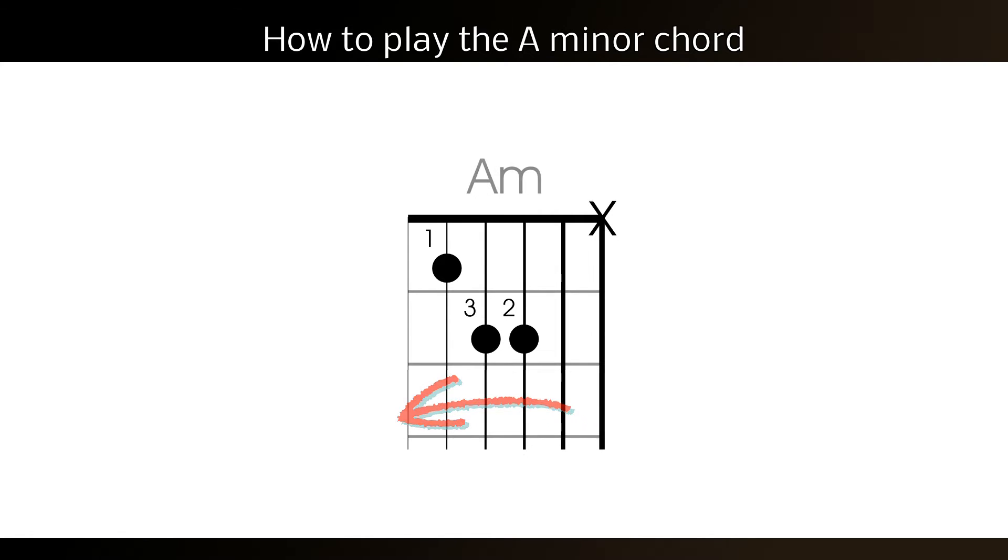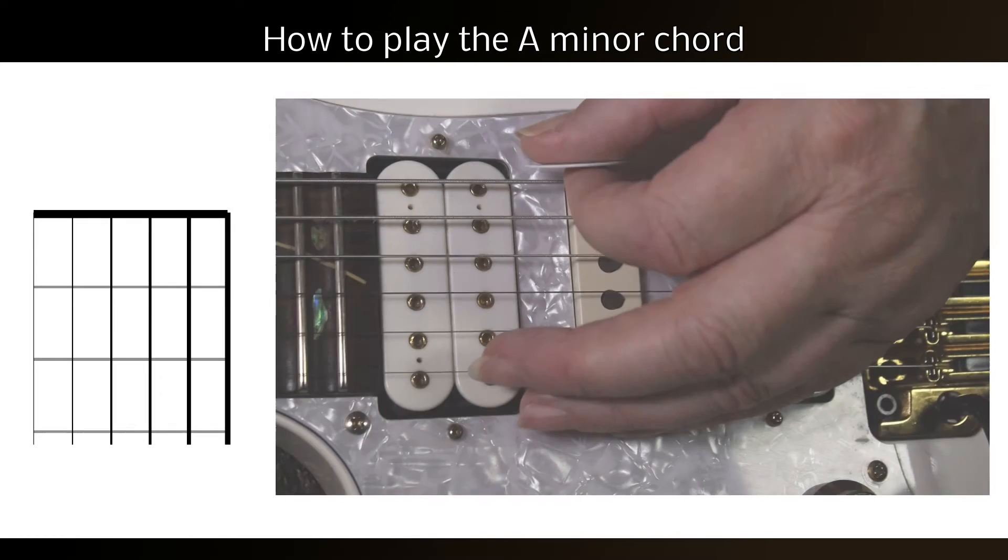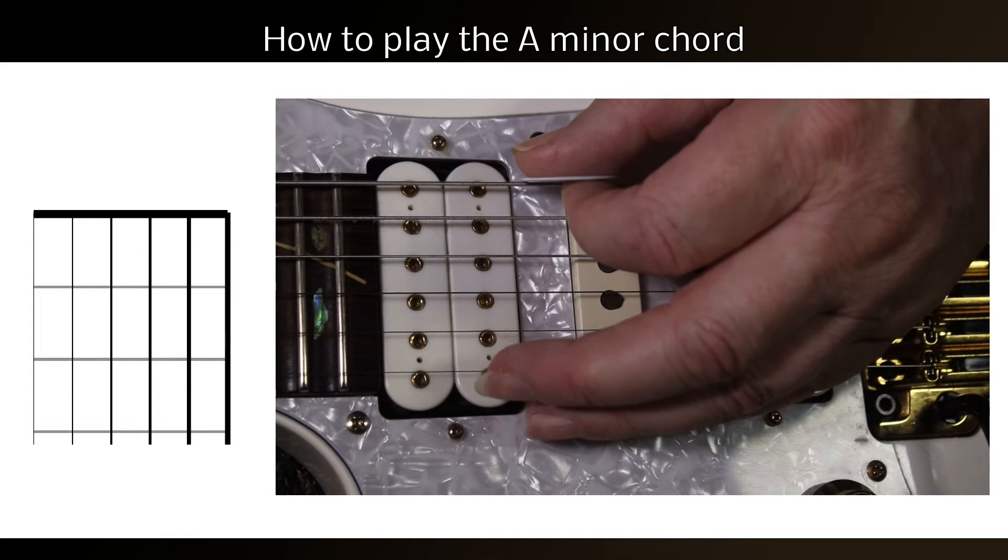If your A minor isn't sounding correct, here's a few suggestions as to what might be causing the problems. Firstly, check the tuning of the guitar. Take all your fingers off and play the open strings one by one, and possibly check it with a tuner.